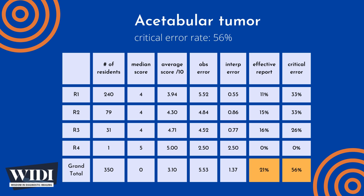We define a report having a critical error to be one with scores between 0 and 2 — in terms of letter grades, this would be an F or a D. In this most-missed case, 56% of residents produced reports with critical errors.